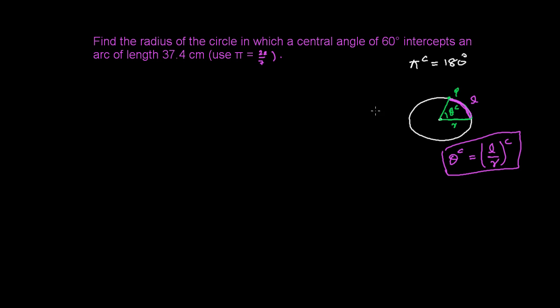Based on this relationship, we solve the question. Find the radius where a central angle of 60 degrees intercepts an arc of length 37.4 cm. The arc length is 37.4 cm, and angle θ is given in degrees. The formula uses radians, but we're given 60 degrees.